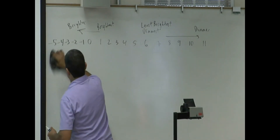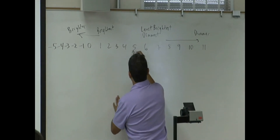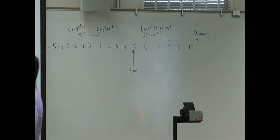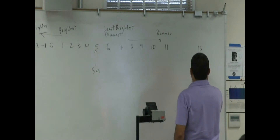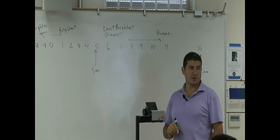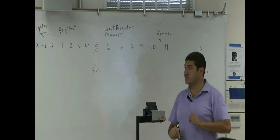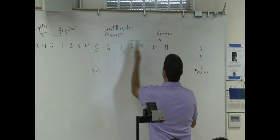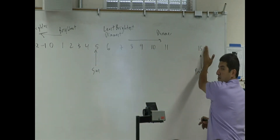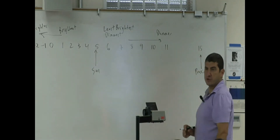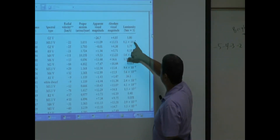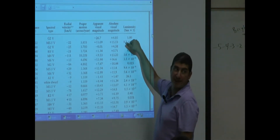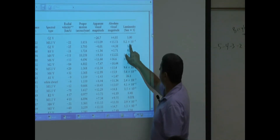The Sun is basically right around 4.85 on the absolute scale. Proxima Centauri gets 15.53, so it's all the way over on the dim end. Is that brighter or dimmer? Dimmer — by about how many times? If this is a 5 and this is a 15, that's a difference of 10, and every 10 is 10,000 times. So Proxima Centauri is about 10,000 times dimmer. The table confirms this: 8.2 × 10⁻⁴, which is consistent.